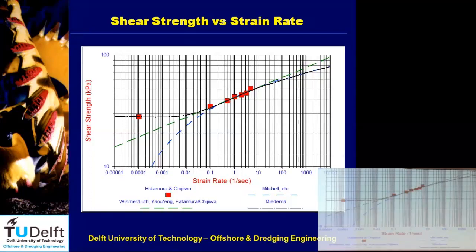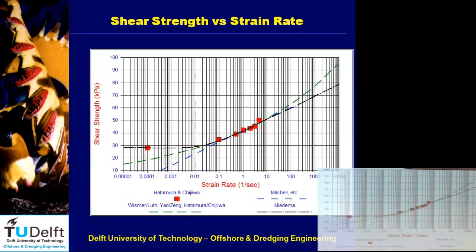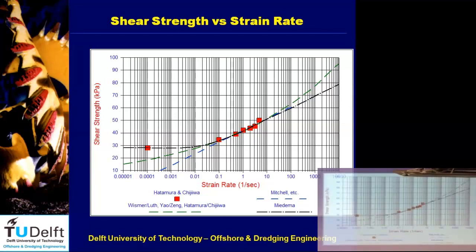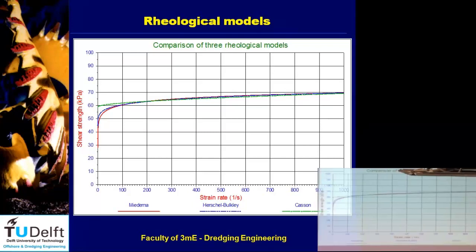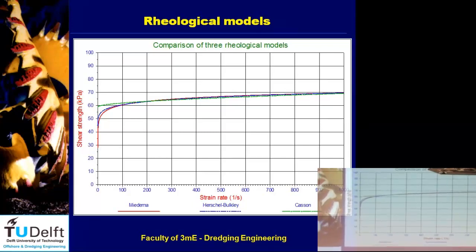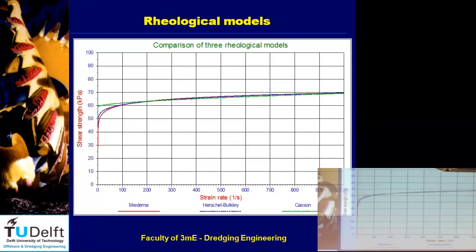The beta graph: horizontally we have blade angle, vertically the shear angle. Without adhesion, the shear angle can become very high; with high adhesion, the shear angle is lowest. Normally, shear angles in clay are between 30 and 40 degrees — higher than in sand. The shear angle determines the thickness of the layer in front of the blade — if that becomes too thick, it doesn't fit between blades in a cutter head, blocking the system. I need this angle to calculate maximum production.